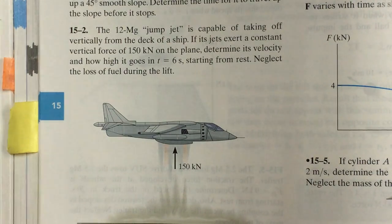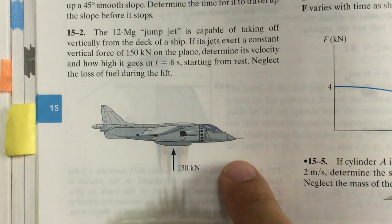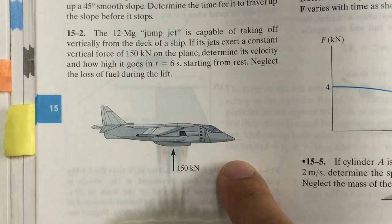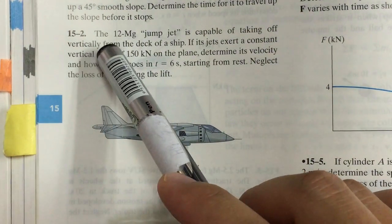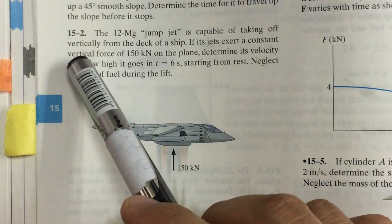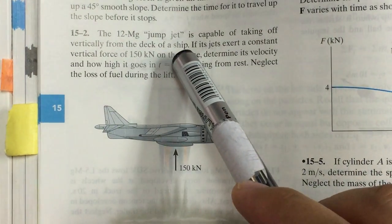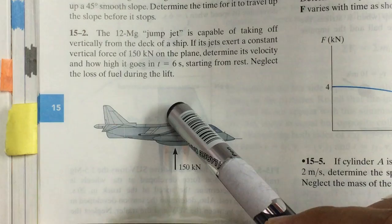In this problem 15.2, we are going to deal with a vertical takeoff and landing vehicle. So here it says that the 12 megagram jump jet is capable of taking off vertically from that of ship. So this is only one direction, the y direction.